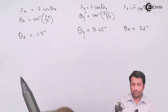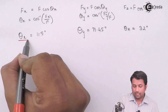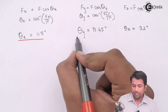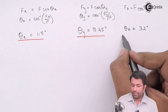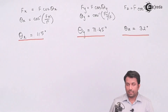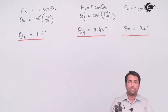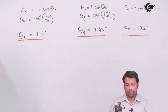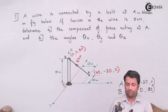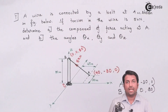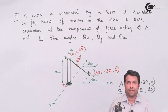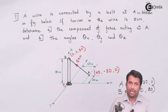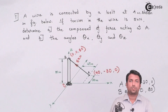The second part of the question — finding the angles with respect to the X, Y, and Z axes — is done. This is how we calculate the force vector components acting at A and the angles that the force makes with the respective axes. I hope you have understood this example. Thank you.